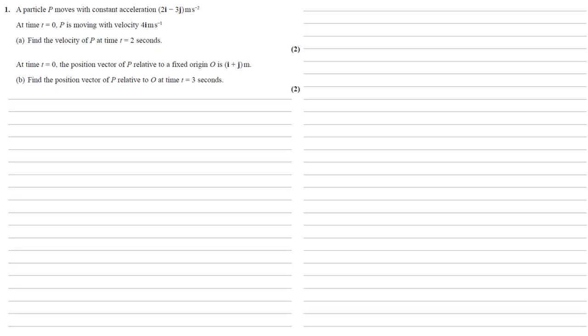Particle P moves with constant acceleration 2i minus 3j meters per second squared. At time t equals 0, P is moving with velocity 4i meters per second. For Part A, we need to find the velocity of P at time t equals 2 seconds.